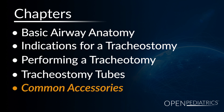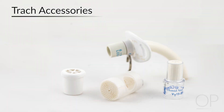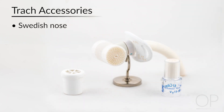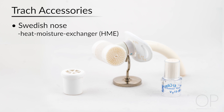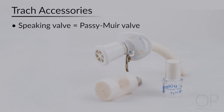Common Accessories. You may encounter various tracheostomy accessories, like a Swedish nose or speaking valve. The Swedish nose is a type of HME, or heat-moisture exchanger, which helps make up for the fact that the nose and mouth are no longer humidifying and warming inspired air. Small sponges capture expired moisture and help to warm and humidify inspired air. A speaking valve, or Passy Muir valve, functions as a one-way valve at the end of the tracheostomy tube.